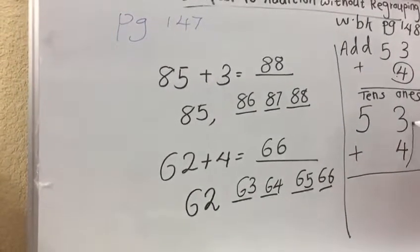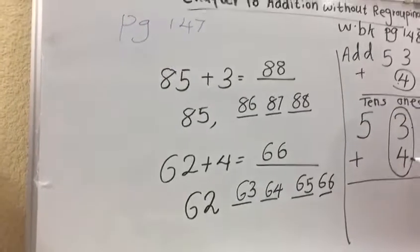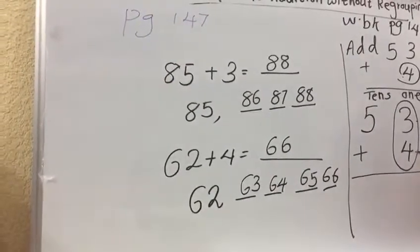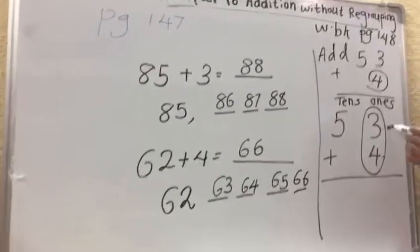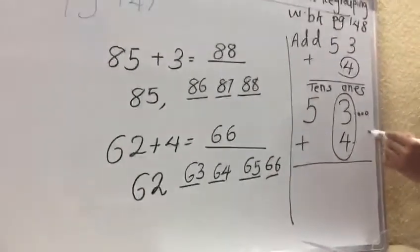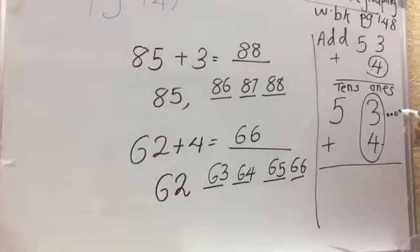First we will add the ones place, 3 plus 4. Always we will keep the big number in our mind and small number in our hand. 4 plus 3: 4, 5, 6, 7.